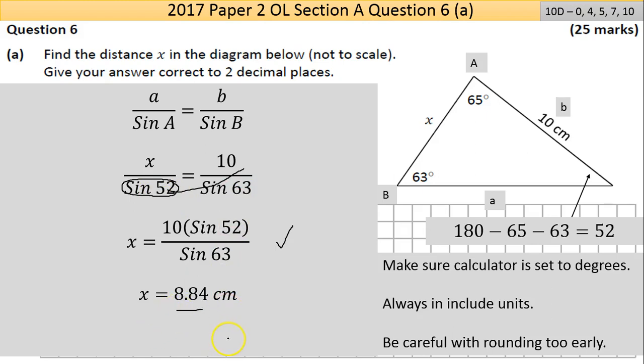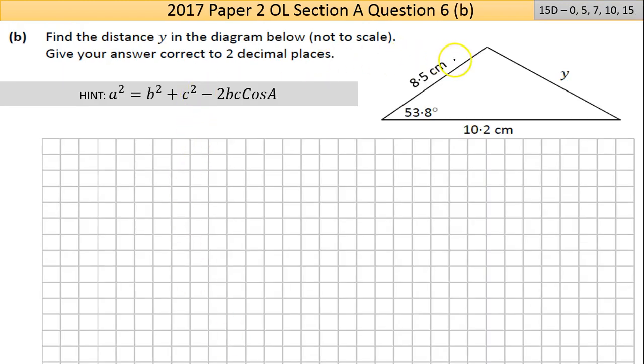Now Part B. In this particular triangle, it's a different one. Still non-right angle, so tangent won't work. Sine rule won't work. They're giving you a hint here and written down the cosine rule for you. If you think about it: I know an angle, the two sides either side, then I can find the side corresponding to the angle.